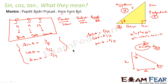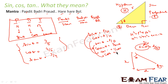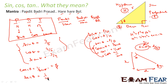We also have reciprocal functions. The opposite of sine is cosec, the opposite of cos is sec, and the opposite of tan is cot. So: cosec theta = 1/sin theta = H/P; sec theta = 1/cos theta = H/B; and cot theta = 1/tan theta = B/P.